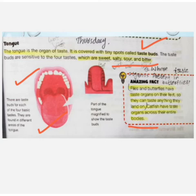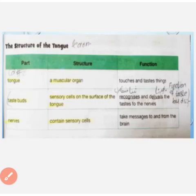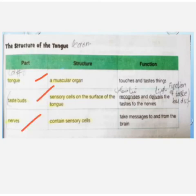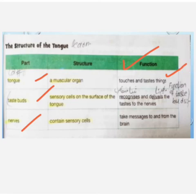What is the function of the tongue? The tongue is a muscular organ with taste buds and nerves. It is used to touch and taste things. On the surface of the tongue there are sensory cells.